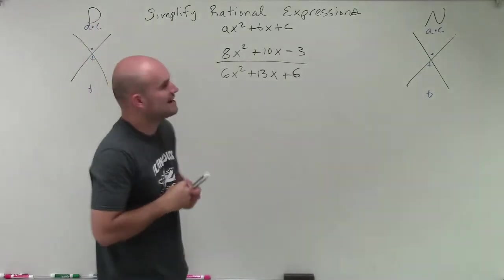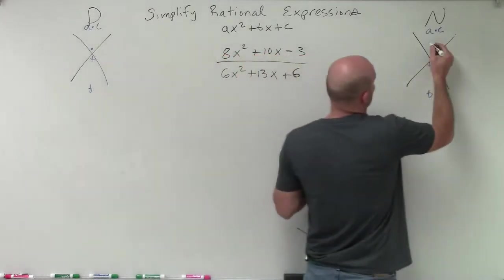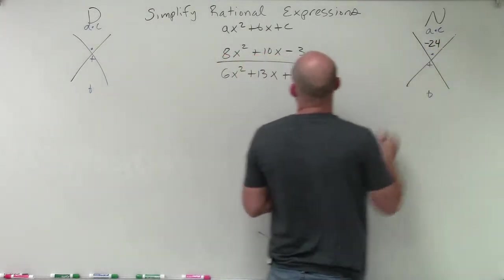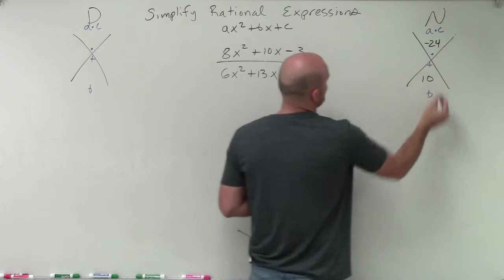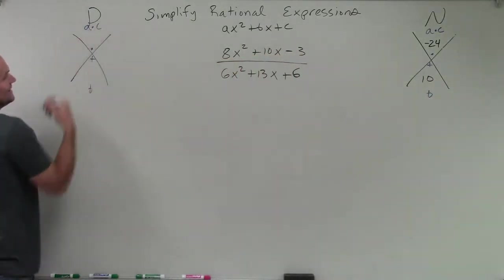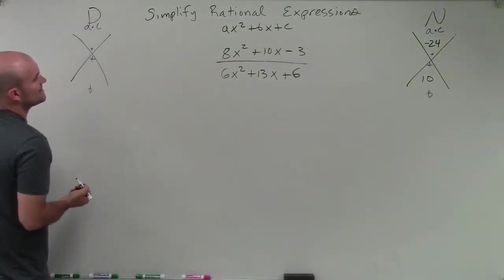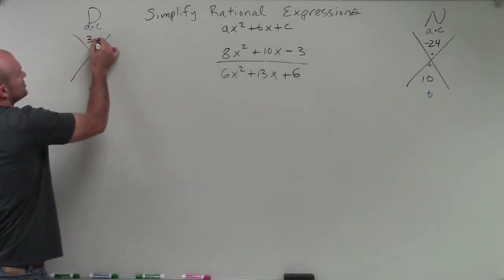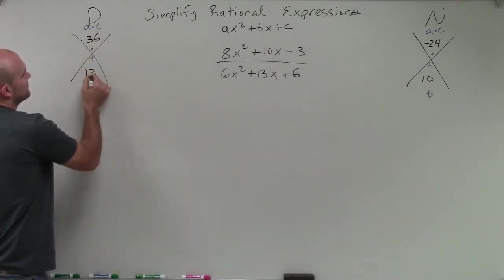So for my numerator, a times c is going to equal negative 24, and my b is going to be a positive 10. My a times c over here is, for my denominator, is going to be 6 times 6, which is 36, and then a positive 13.